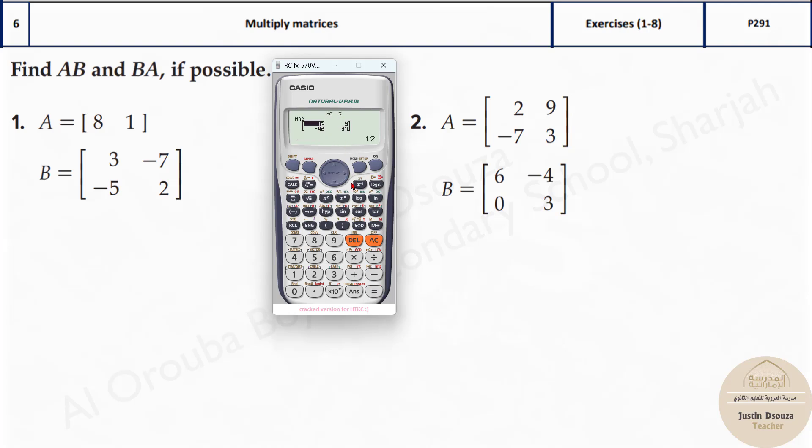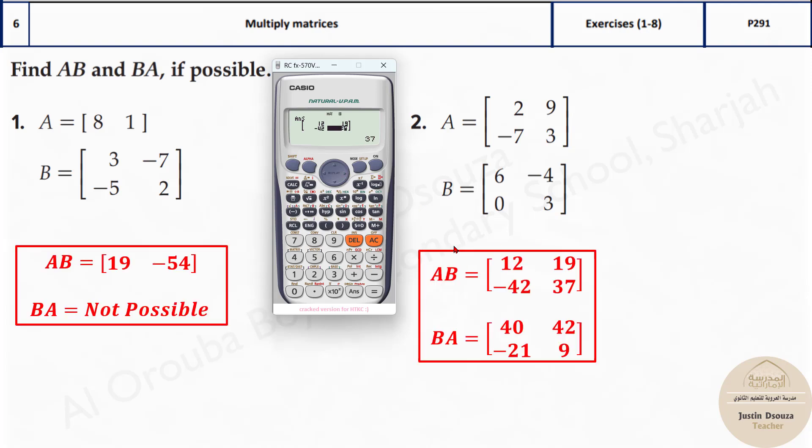Press equal to, you get the answers 12, 19, minus 42, and 37. Let's just look at the answers. This is the answer but multiplying B and A is not the same.